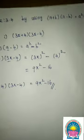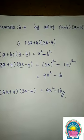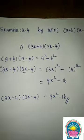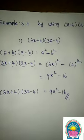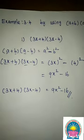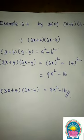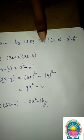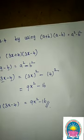Second identity: (a + b)² = a² + 2ab + b². Note: when plus, 2ab is positive; when minus, 2ab is negative. Identity 3: (a - b)² = a² - 2ab + b². Fourth identity: (a + b)(a - b) = a² - b².